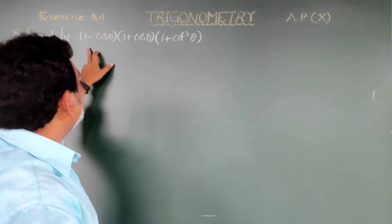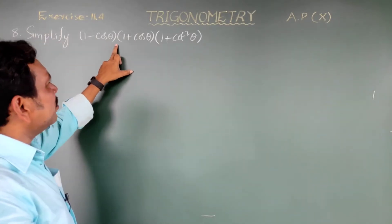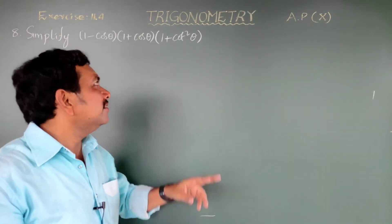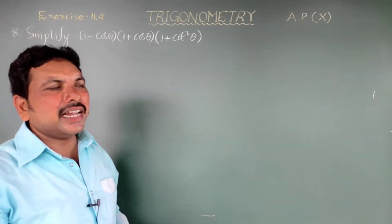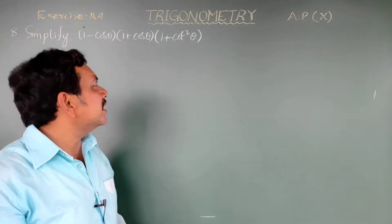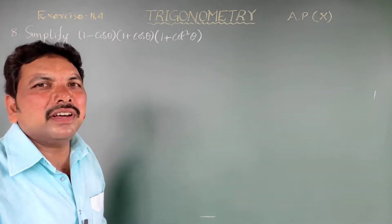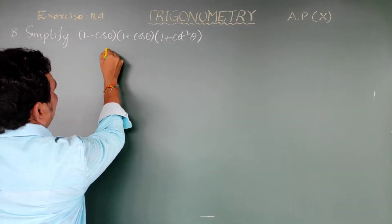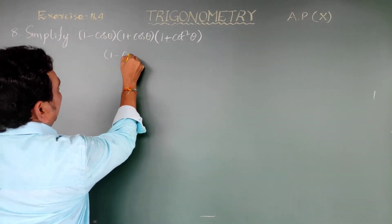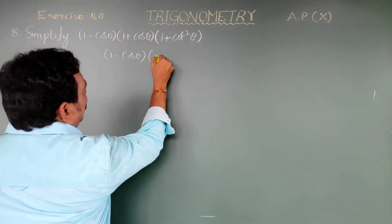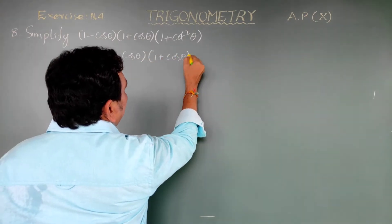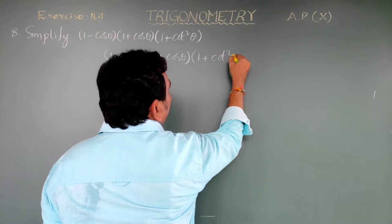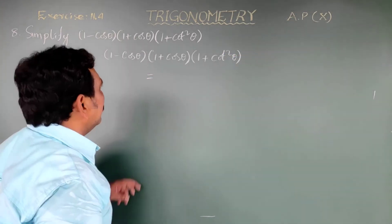Next question: simplify (1 minus cos theta) into (1 plus cos theta) into (1 plus cos square theta). Let us simplify (1 minus cos theta) into (1 plus cos theta) into (1 plus cos square theta).